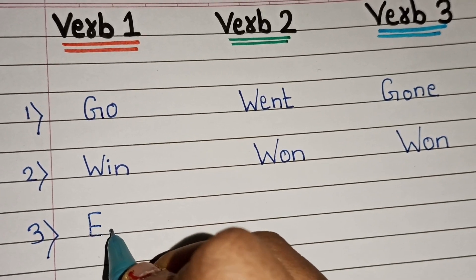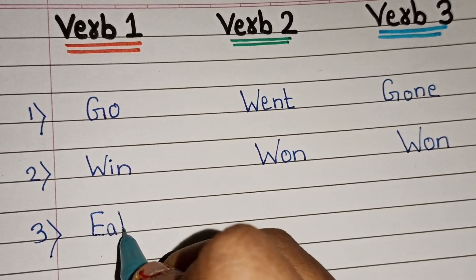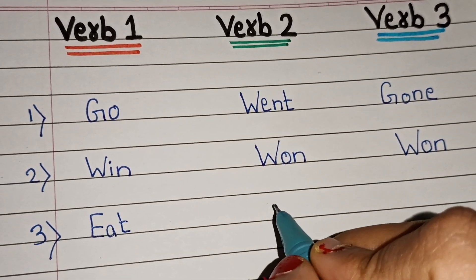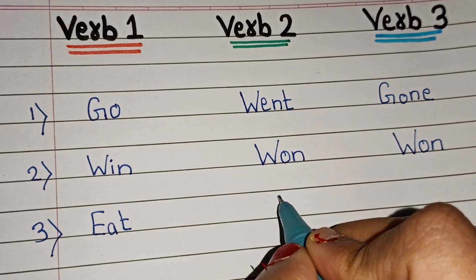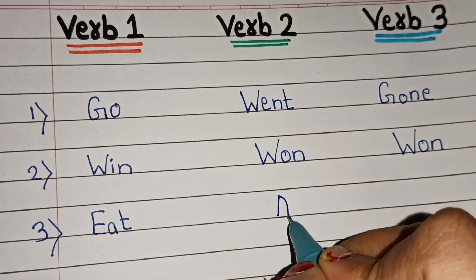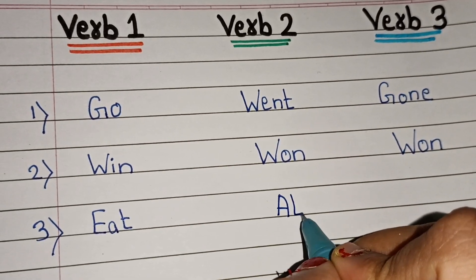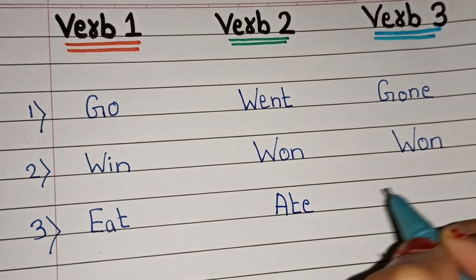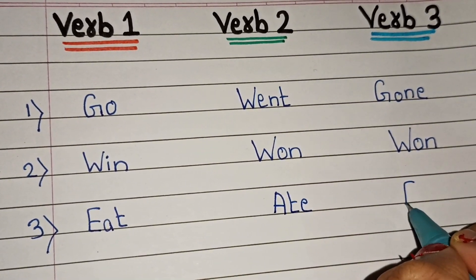Third: eat — verb 1; ate — verb 2; eaten — verb 3.